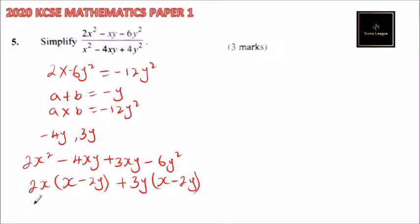Which we can now factor out and say this is x minus 2y, and we have 2x plus 3y. So that is the first one.